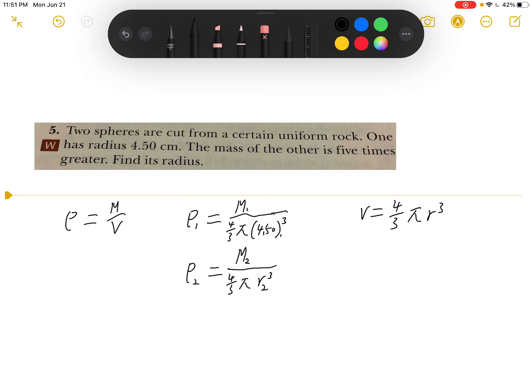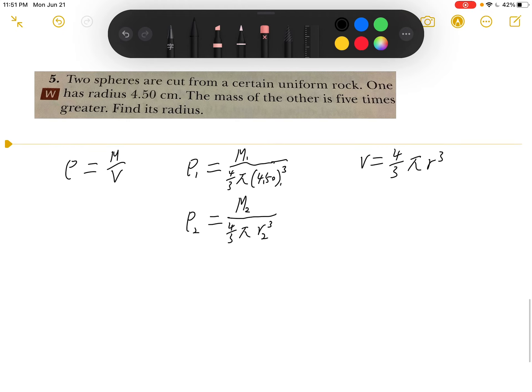So because they have the same density, we will say that rho 1 equals rho 2. We will get M1 divided by 4/3 pi r1 cubed equals M2 divided by 4/3 pi r2 cubed.